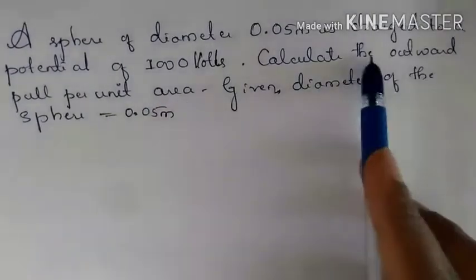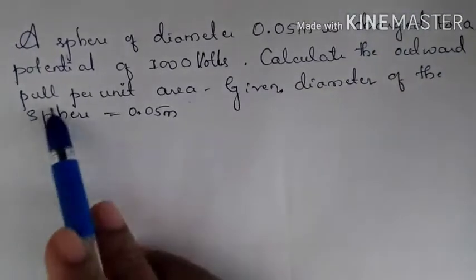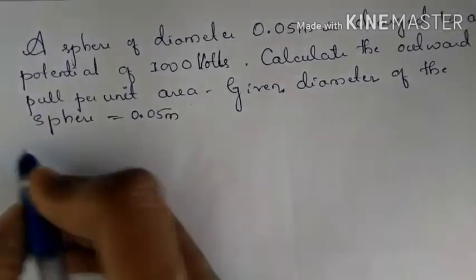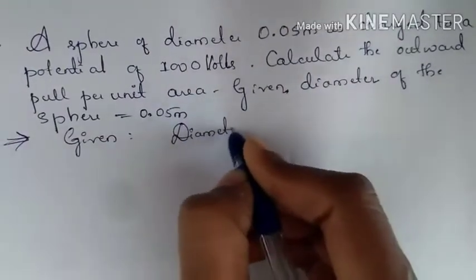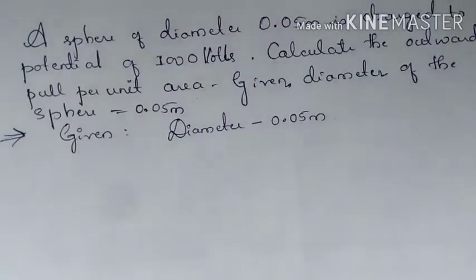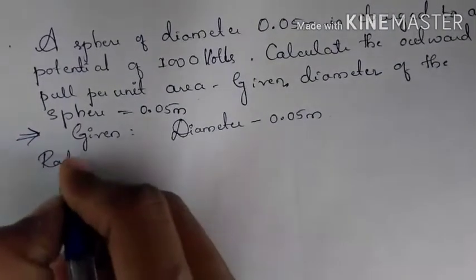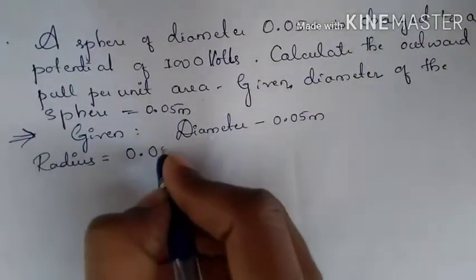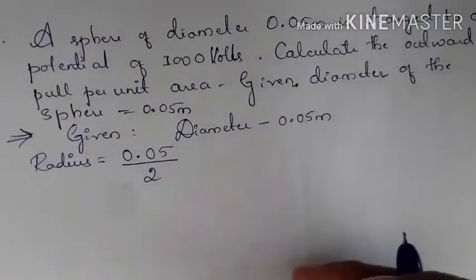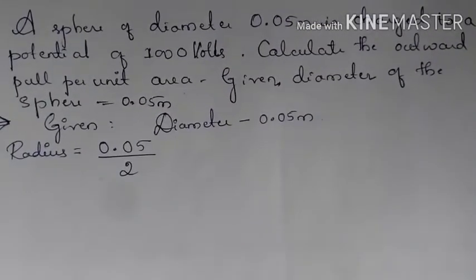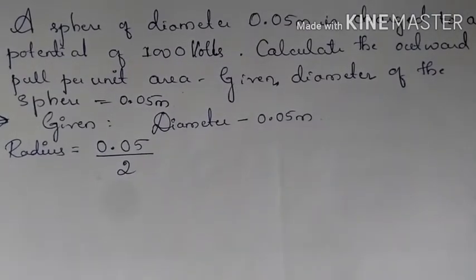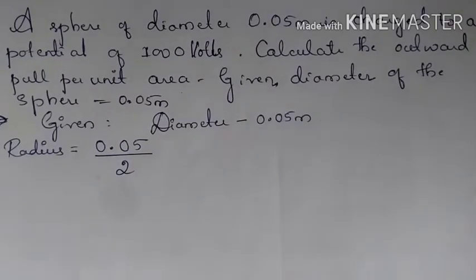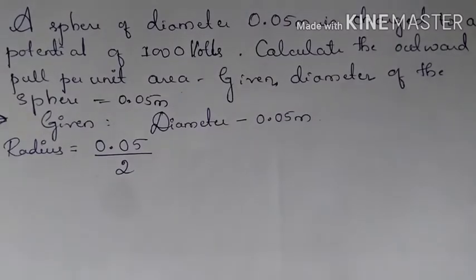We have to find the outward pull per unit area. The diameter is 0.05 meter, so we convert to radius: radius equals 0.05 divided by 2. We know the relationship between electric field and potential — E equals V divided by R — because the formula for E is 1/(4πε₀) × q/R² and the formula for V is 1/(4πε₀) × q/R. Dividing V by R gives E.